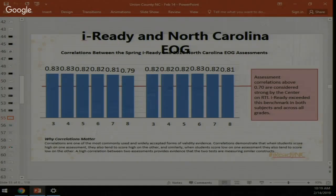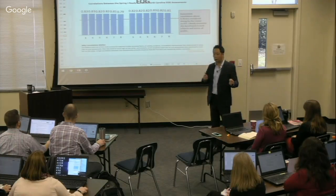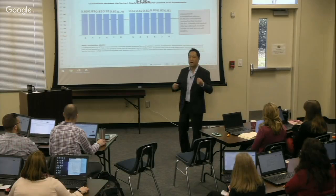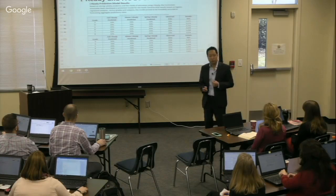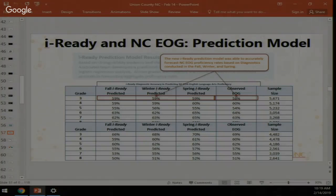Groups like the Center for RTI use a threshold of 0.7, so anything above that means the two tests are highly correlated — if you score low on iReady you'll score low on the NC EOG, and vice versa. Using that strong relationship, we built a prediction model. In our study we predicted that 59% of third grade students in the fall would be proficient on the EOG; the actual observed rate was 58%.